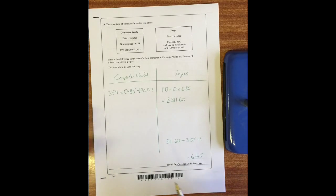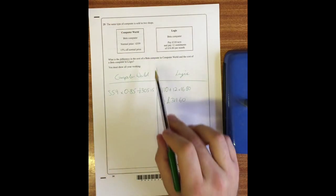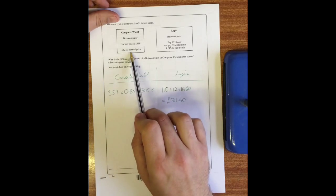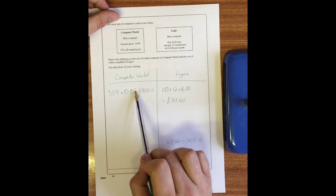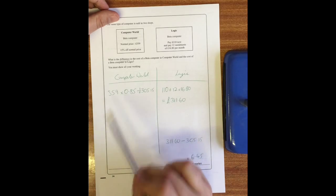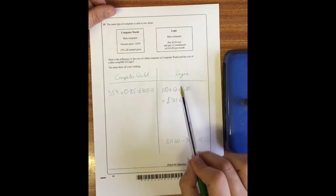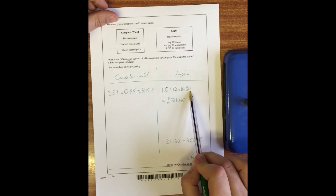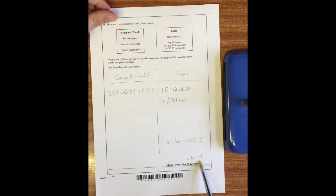Question 25: the same type of computer is sold in two shops. What is the difference - the important word there is difference - in the cost between Computer World and Computer Logic? So at Computer World you get 15% off, so the best way of doing that is by timesing by 0.85, basically finding 85% of the price, using a calculator to get 305 pounds 15. You can do that by finding 10% and 5%, adding together and taking it off, but you should still get the same price there. At Logic Computers you put 110 pounds down and you pay 12 lots of 16 pound 80. If you put that into your calculator you get 311 pounds 60. The difference is when you take these two away from each other, you get six pound 45.